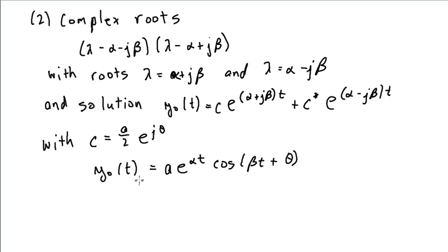And then the a and the theta here are determined from the initial conditions. Of course, the alpha and beta come from the roots of our characteristic equation. You've got to be a little careful here.